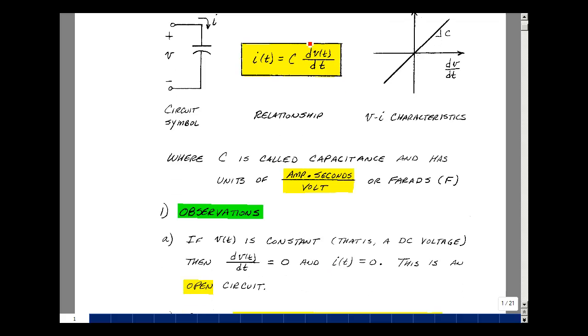Now, given this relationship, which is true for every instant in time, we can make some observations. If the voltage across the capacitance is constant, in other words DC, then the derivative is equal to zero. And so the current through the capacitance is zero in what we call steady state.